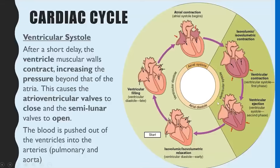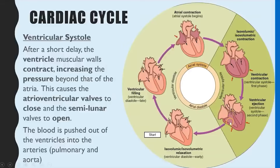The next stage is ventricular systole, shown by the darker green section. There's a short delay, then the ventricles contract from the bottom upwards. Because the ventricles have a really thick muscular wall, you get a big contraction causing a large decrease in ventricular volume and a big increase in pressure. That high pressure forces the AV valves shut and the semilunar valves open, so blood moves up through the pulmonary artery and the aorta. Then all the muscles relax and blood re-enters through the atria.